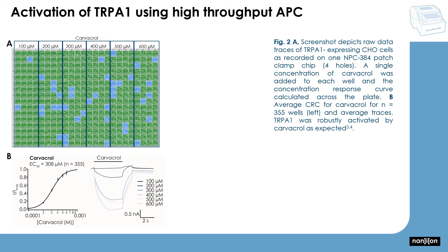In the next set of experiments, we recorded TRPA1 expressed in CHO cells on the SynchroPatch 384. TRPA1 was activated by carvacrol, shown in panels A and B, in a concentration-dependent manner with an EC50 of 308 micromolar for an average of 355 wells.